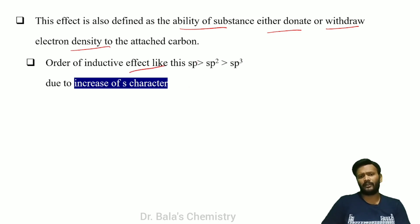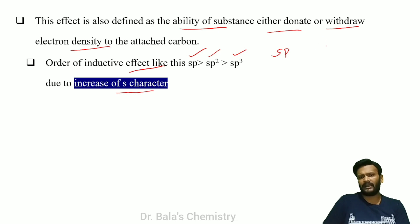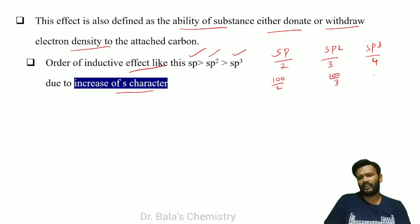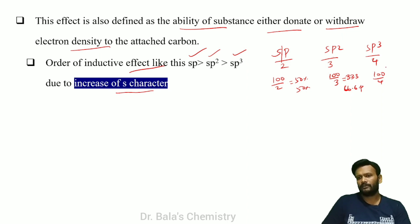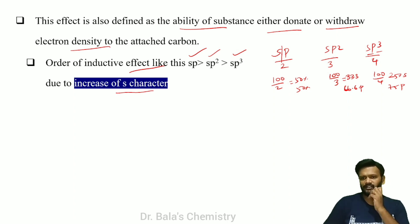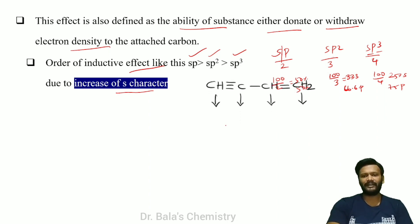The order of inductive effect: SP is less than SP2, which is less than SP3. If you look at the S-character — SP has 2 orbitals total, SP2 has 3 orbitals, SP3 has 4 orbitals. So SP is 100/2 = 50% S character, SP2 is 33.3% S, and SP3 is 25% S. More S character means more electronegativity and more inductive effect.